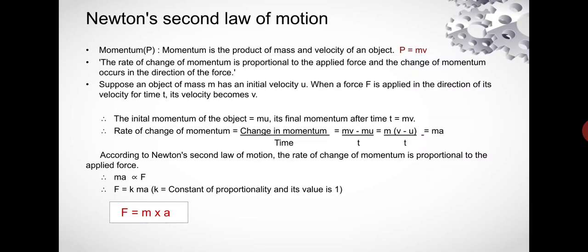Momentum, which is denoted by capital P, is the product of mass and velocity of an object. Therefore P = m × v.